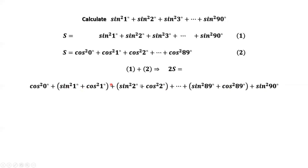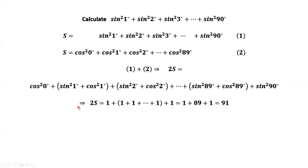What are the values inside each of these parentheses? Each one equals one, by the Pythagorean identity. The first term, cosine squared of zero, equals one because cosine of zero equals one. The last term, sine squared of 90 degrees, is also one because sine of 90 degrees equals one. Then we have one plus one plus one... How many ones? Starting from one and counting to 89, we have 89 ones, giving a total sum of 2S equals 91.